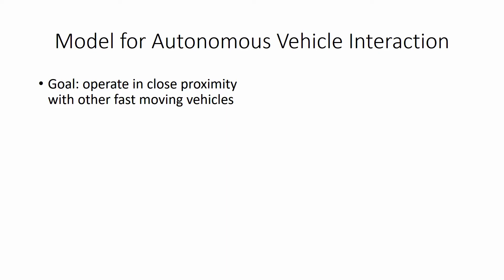Our goal in this work is to develop a method which enables fast autonomous ground vehicles to operate in close proximity to each other. We assume that the vehicles are unable to share any internal planning information.